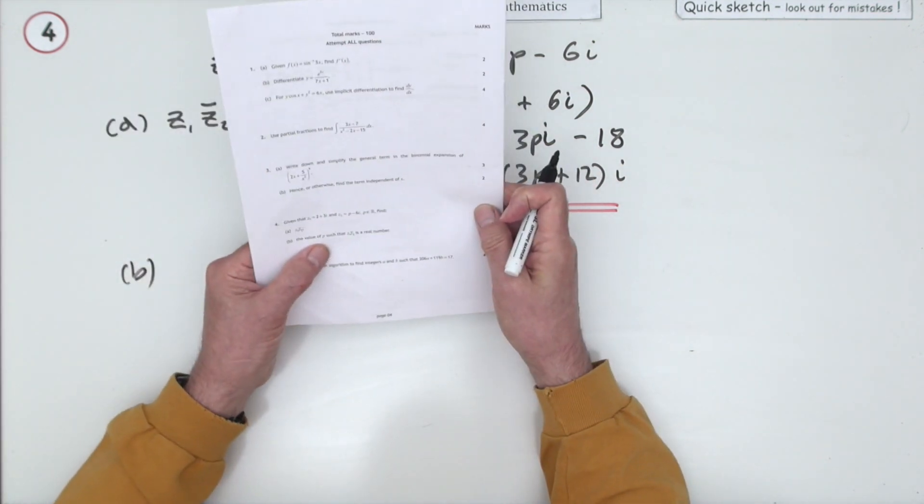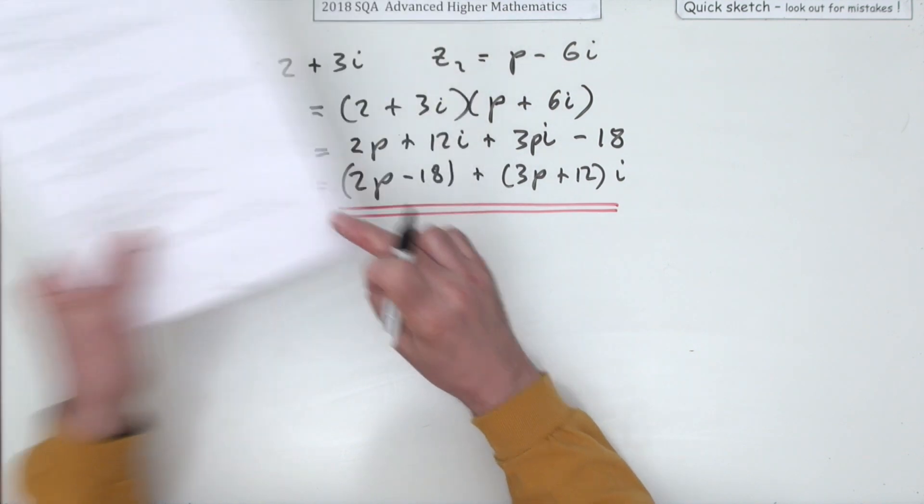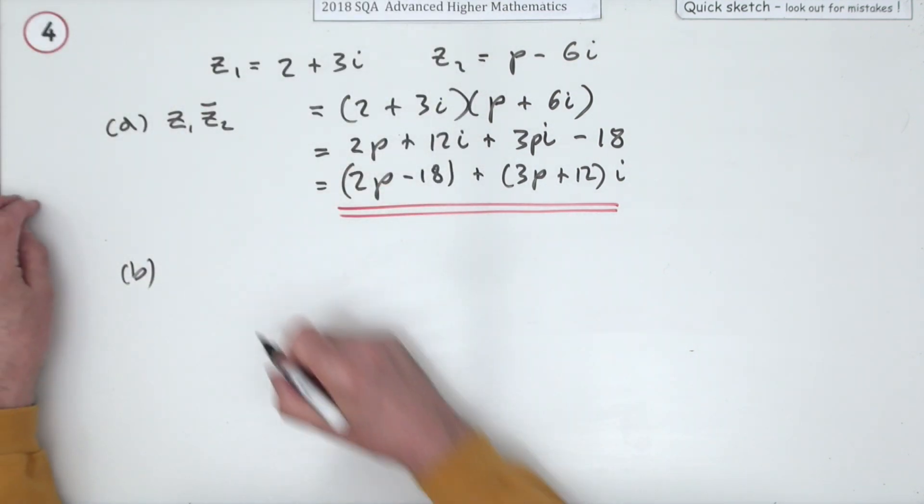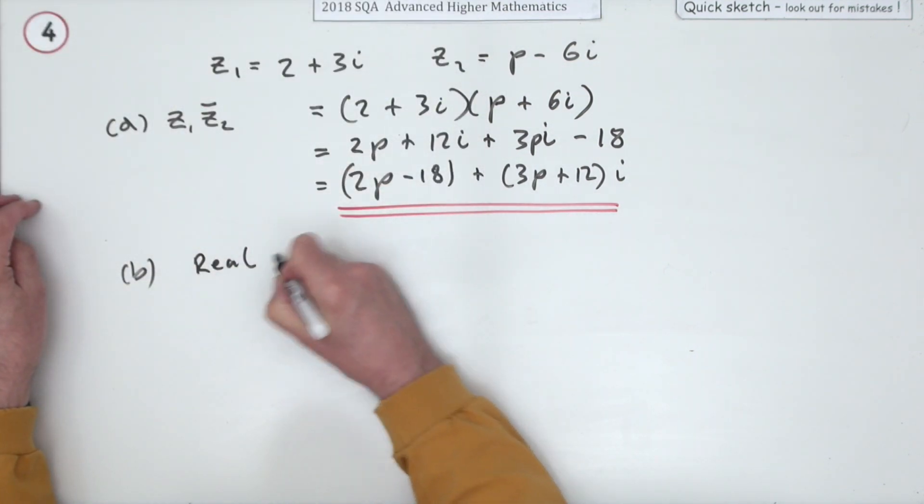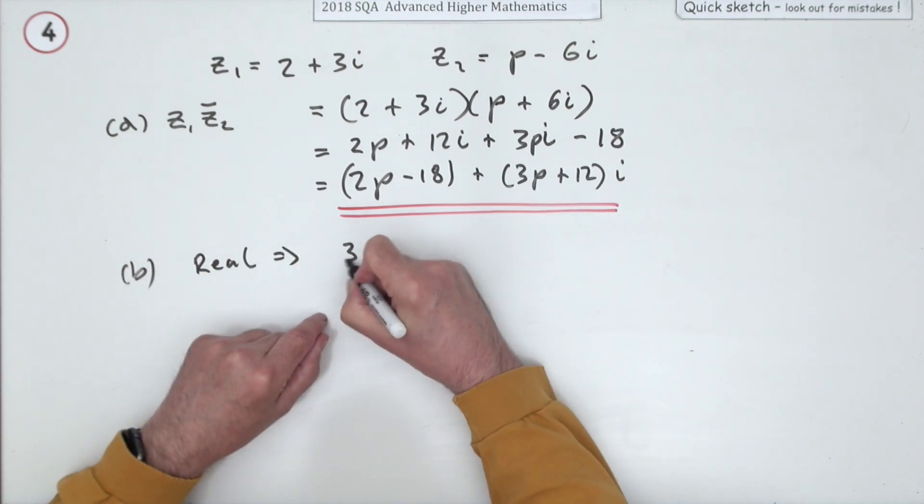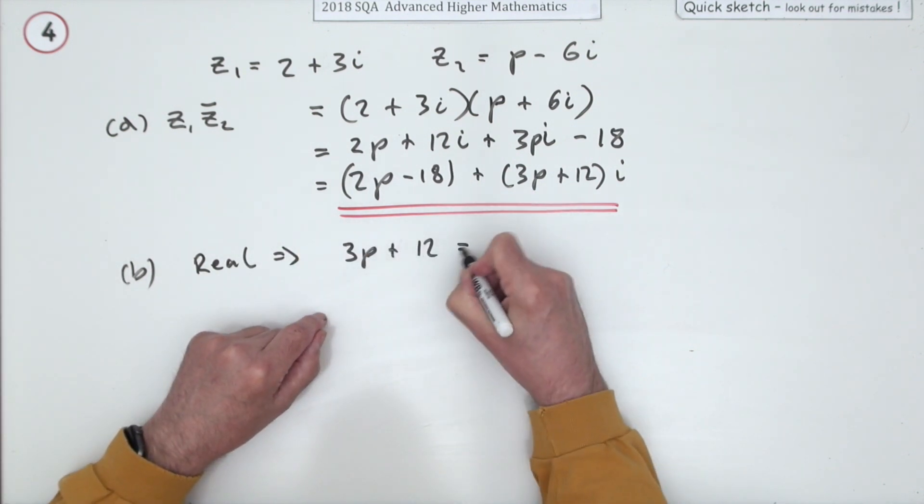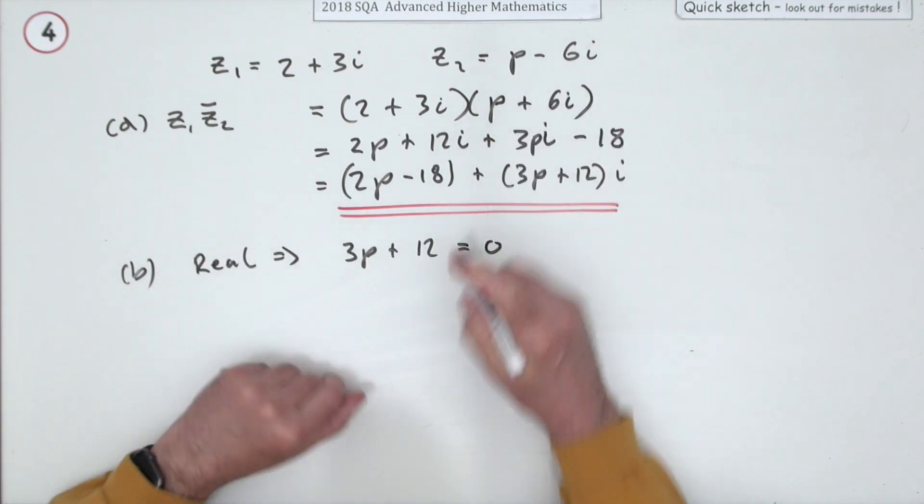Now part B says, what's the value of P so that that's a real number? Well, if it's real, that means the imaginary part should equal zero. Three P plus 12 should be zero, so there's only the real part left.